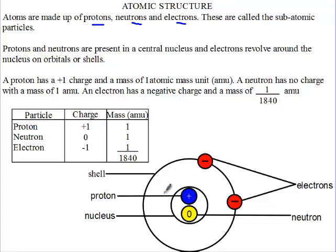A proton has a charge of plus 1 and a mass of 1 atomic mass unit. A neutron has no charge and a mass of 1 atomic mass unit.